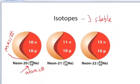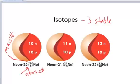But the mass number depends on which isotope you're talking about. The mass number varies; the atomic number stays the same. So in this case, the mass number is 20, 21, or 22.